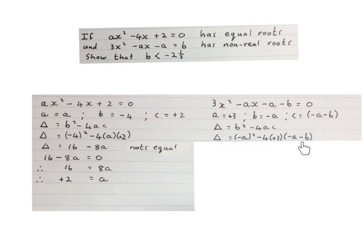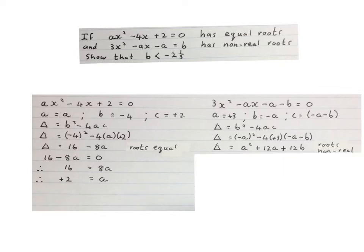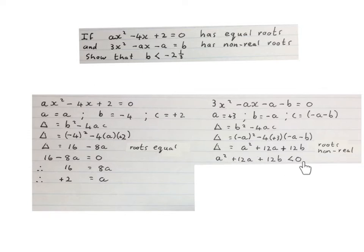Remember to always substitute in brackets — do not make mistakes. We simplify this expression by multiplying minus 4 times 3 into the bracket, and squaring the bracket. After simplification the discriminant will look like this. Because the equation has non-real roots, we write that the discriminant is smaller than zero.